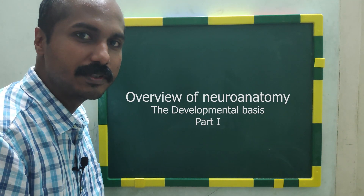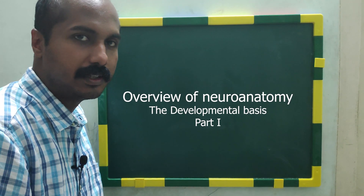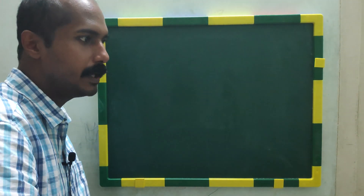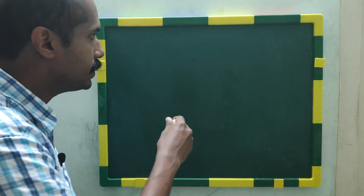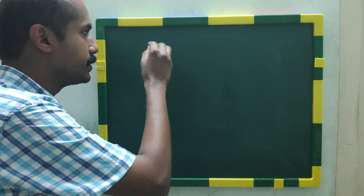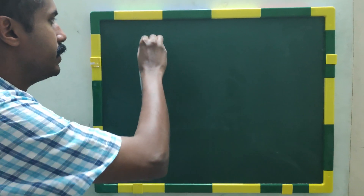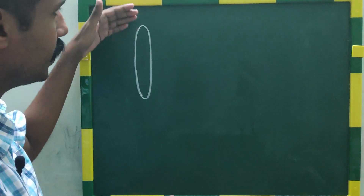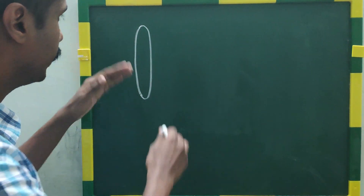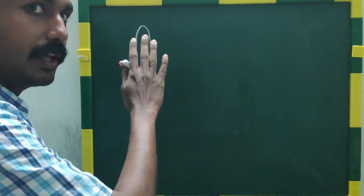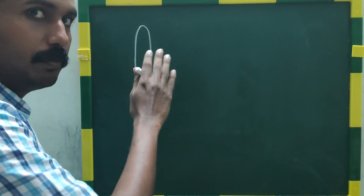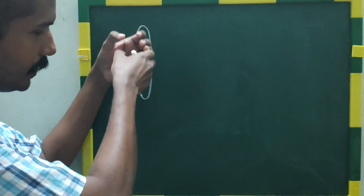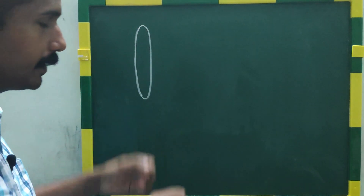In one of the previous videos I mentioned that the neural tube develops into the brain and the spinal cord. Now we are going to see a neural tube from its dorsal aspect. Imagine this is the neural tube — a hollow tube. You are looking at it from the dorsal aspect.